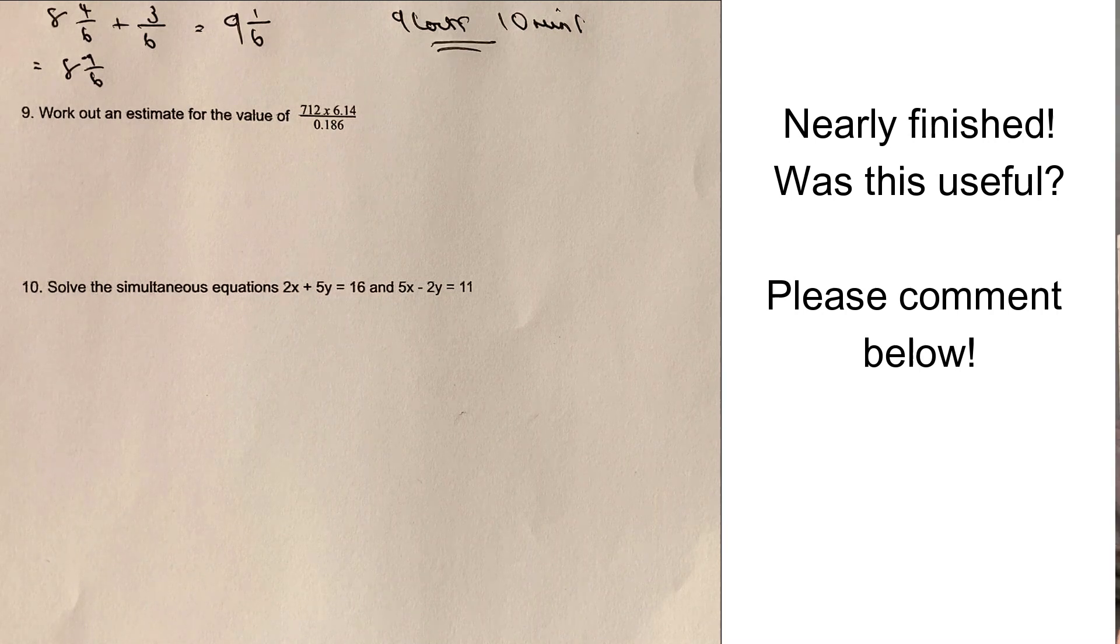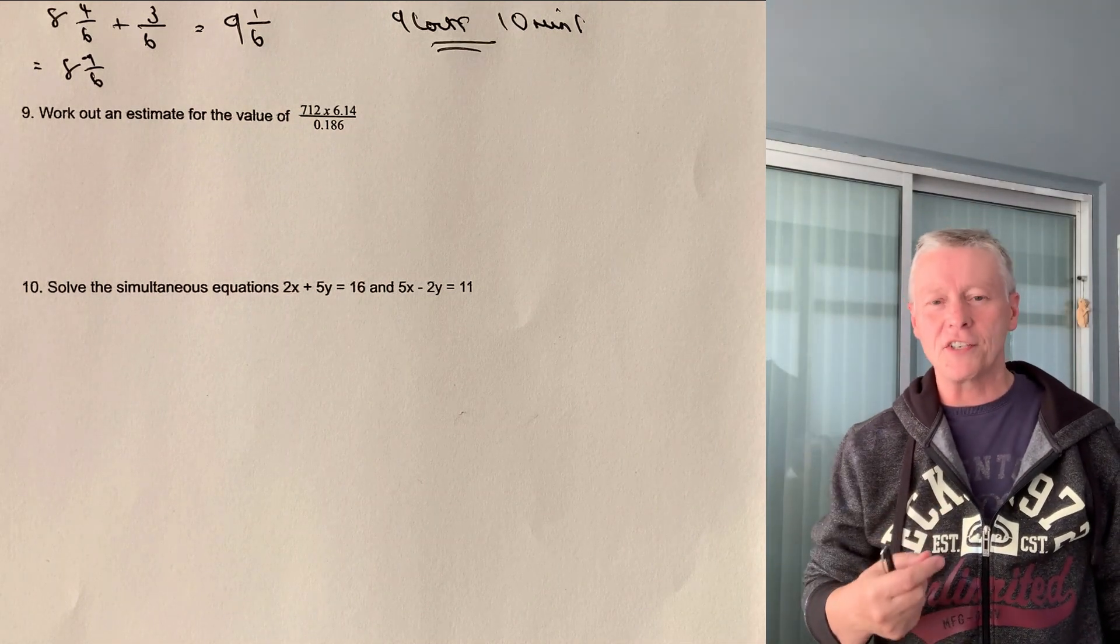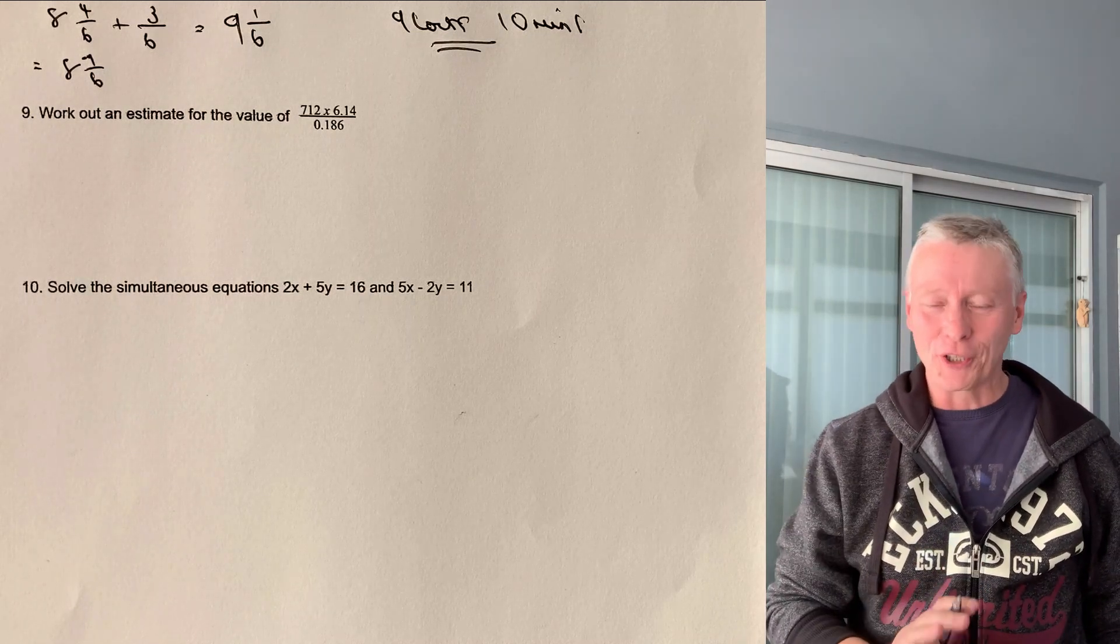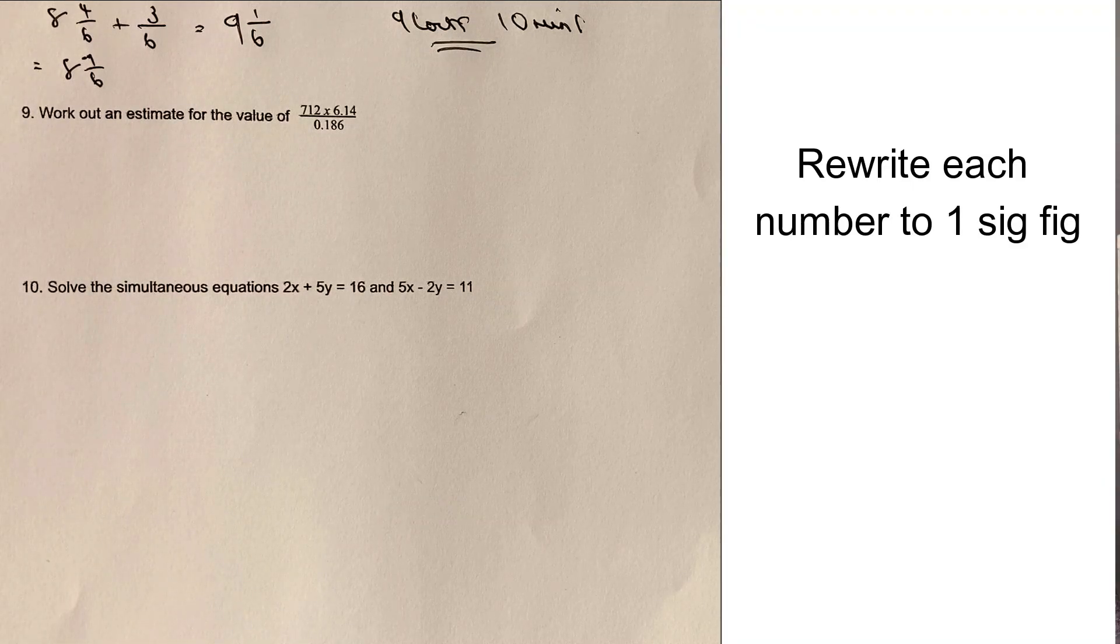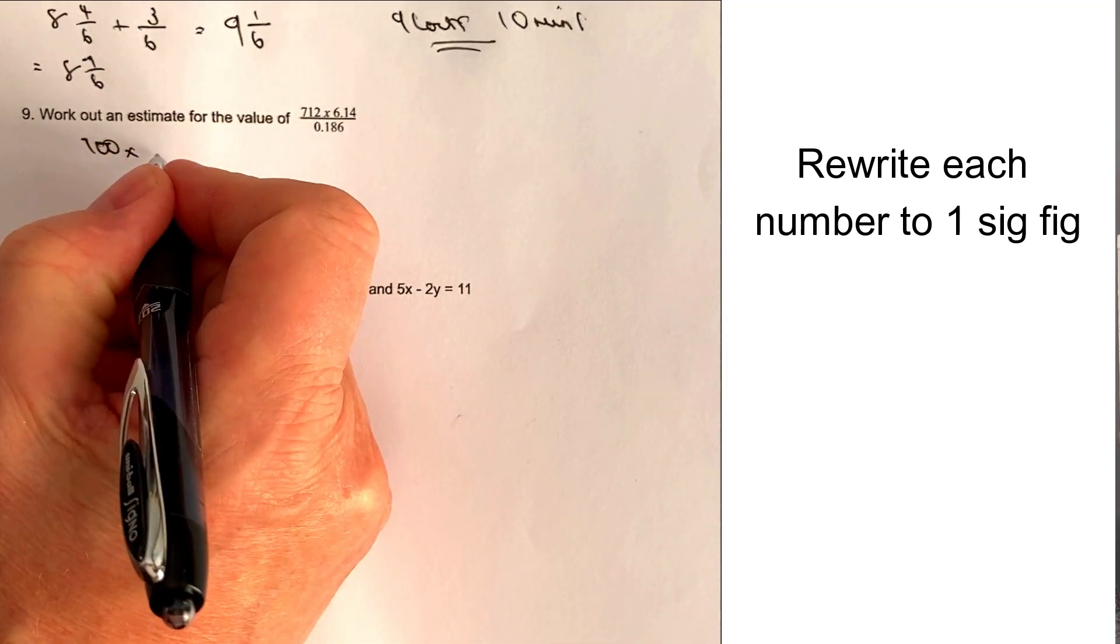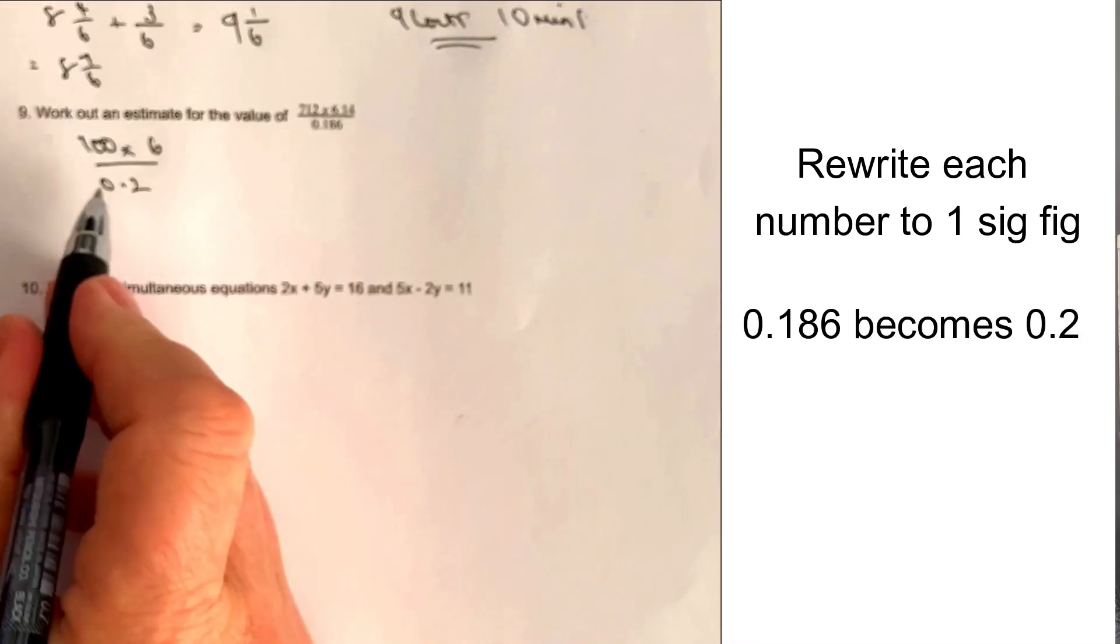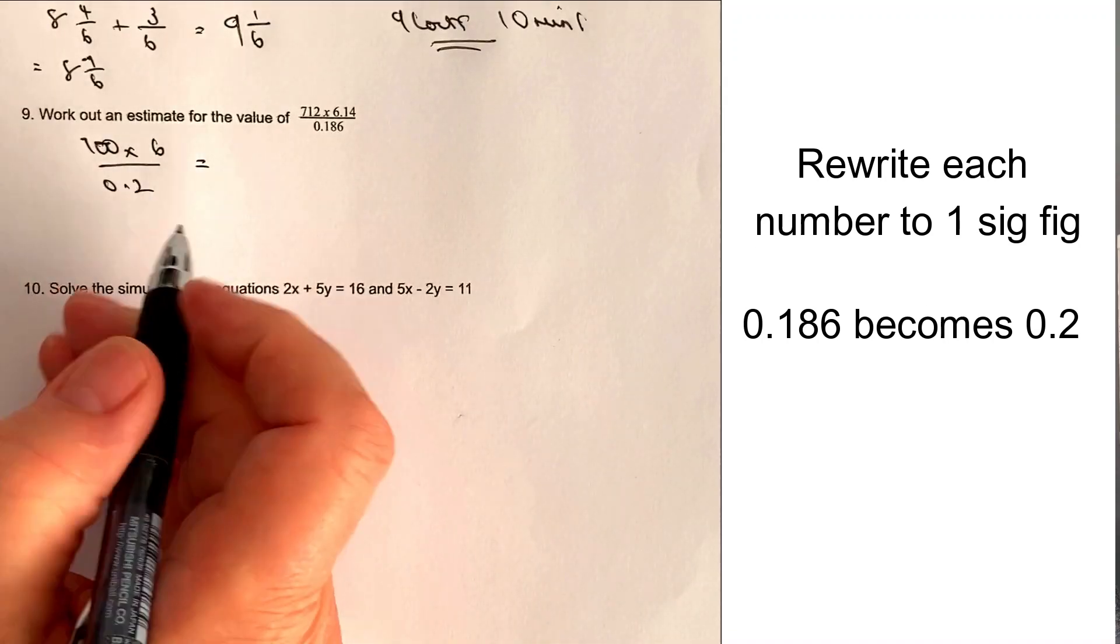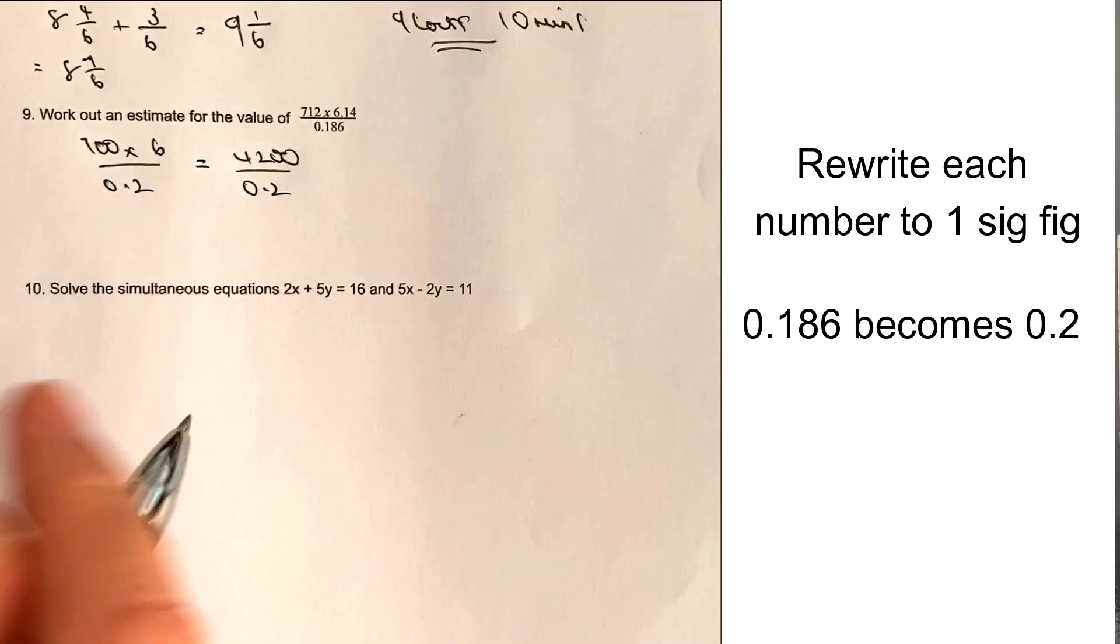So question number nine is work out an estimate for the value. So the important thing with that is that you recognise it's to one significant figure. So let's have a look at rewriting that, making the numbers a little bit easier to deal with. And again, this is a non-calculator. It is an estimation. So it's going to be 700 multiplied by six divided by 0.2. And if you're not sure about how I've done that, let me know and I'll be able to point you in the right direction.